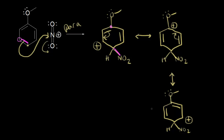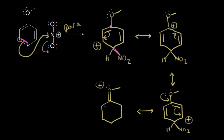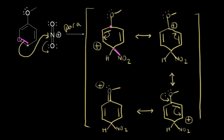Once again, the presence of that lone pair of electrons on the oxygen right next to the benzene ring allows me to draw another resonance structure. These electrons on the oxygen move into the ring to form a pi bond, giving a fourth resonance structure showing the oxygen double-bonded to the ring with a +1 formal charge on oxygen. So I have a total of four resonance structures when the nitro group adds in the para fashion — the para attack also has four resonance structures, just like the ortho attack.